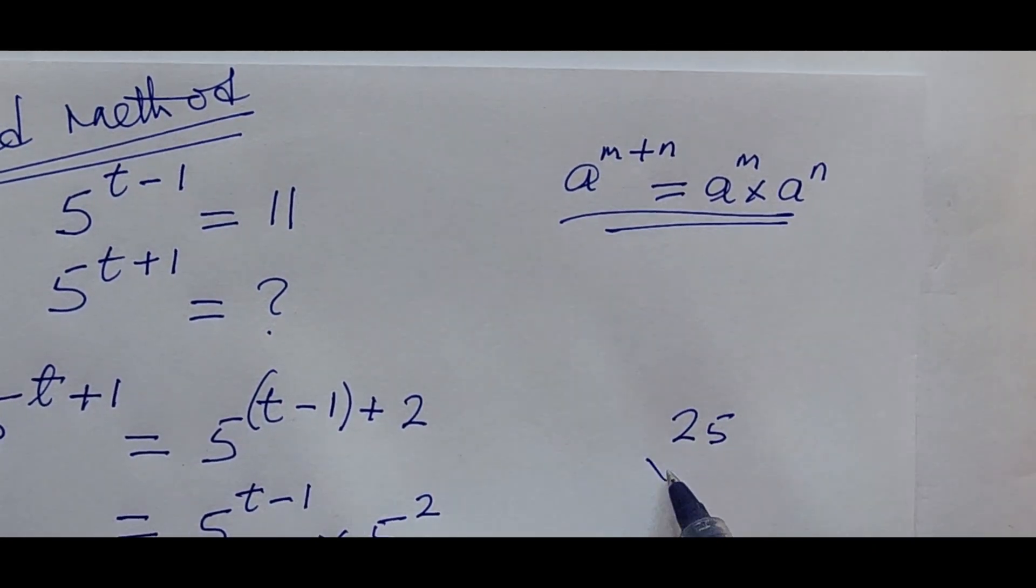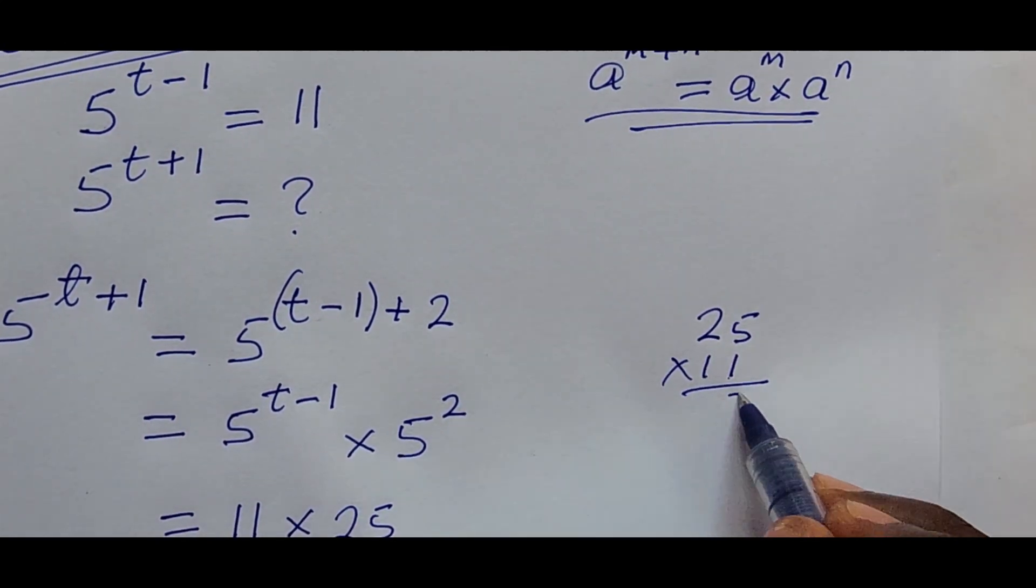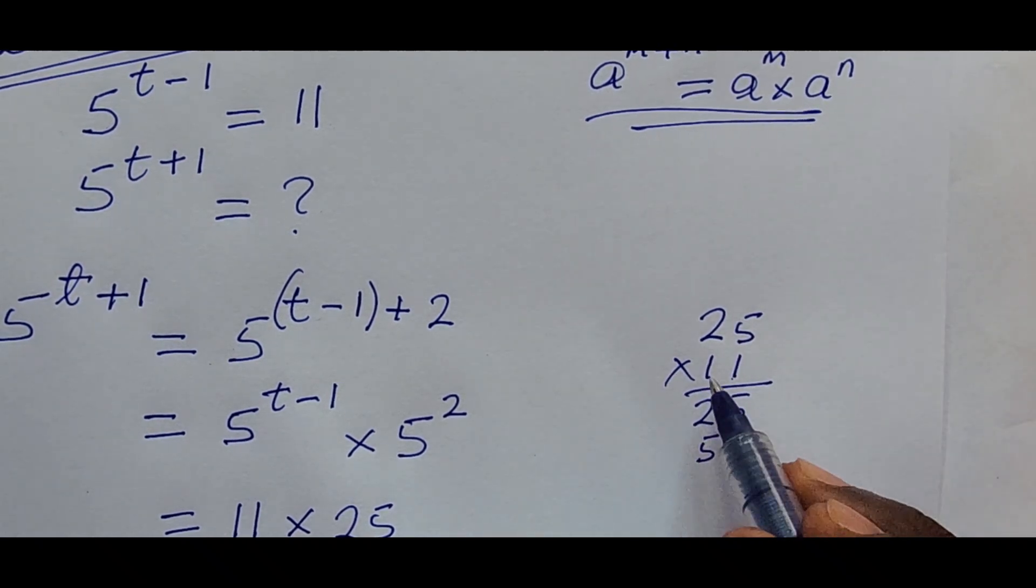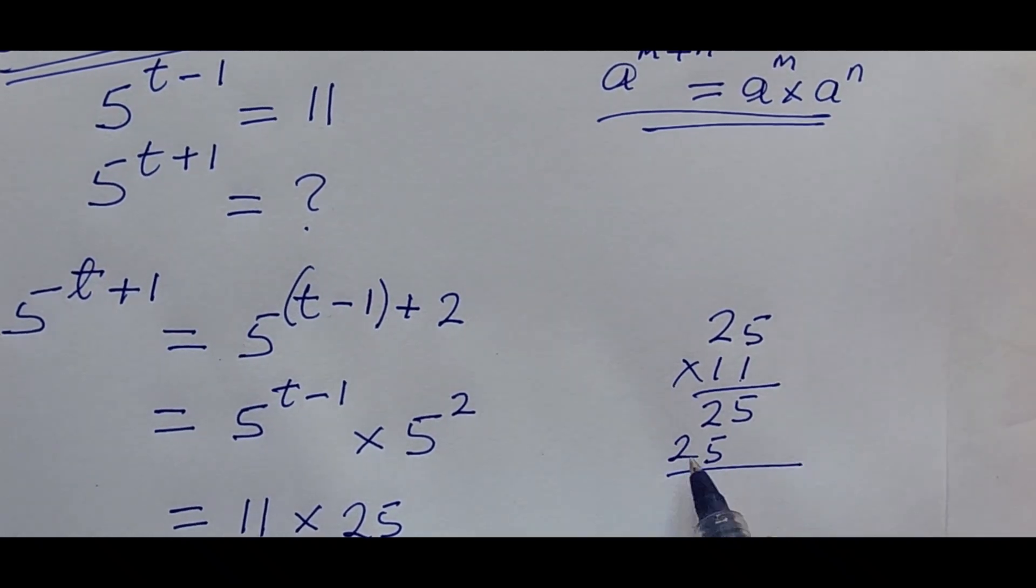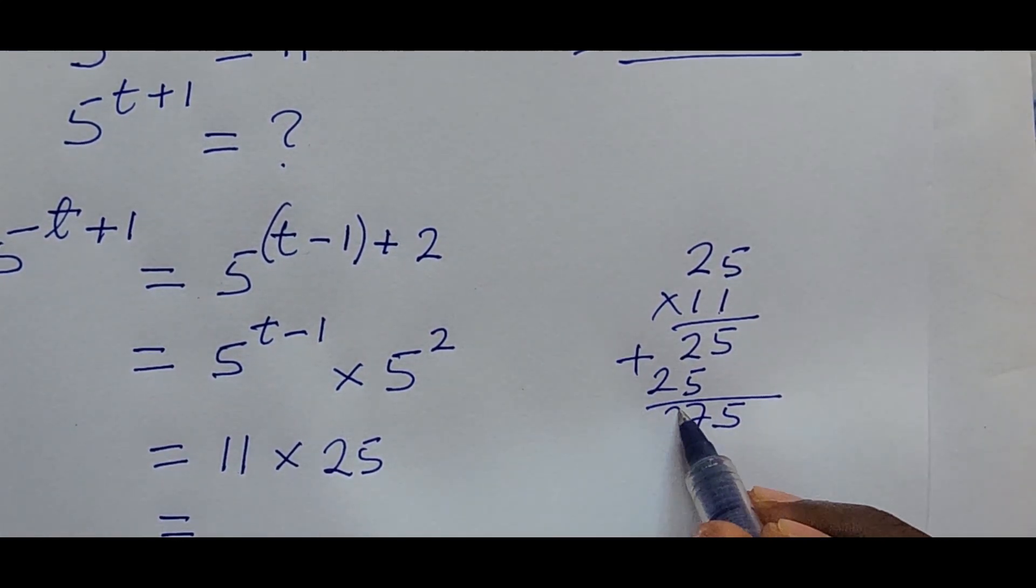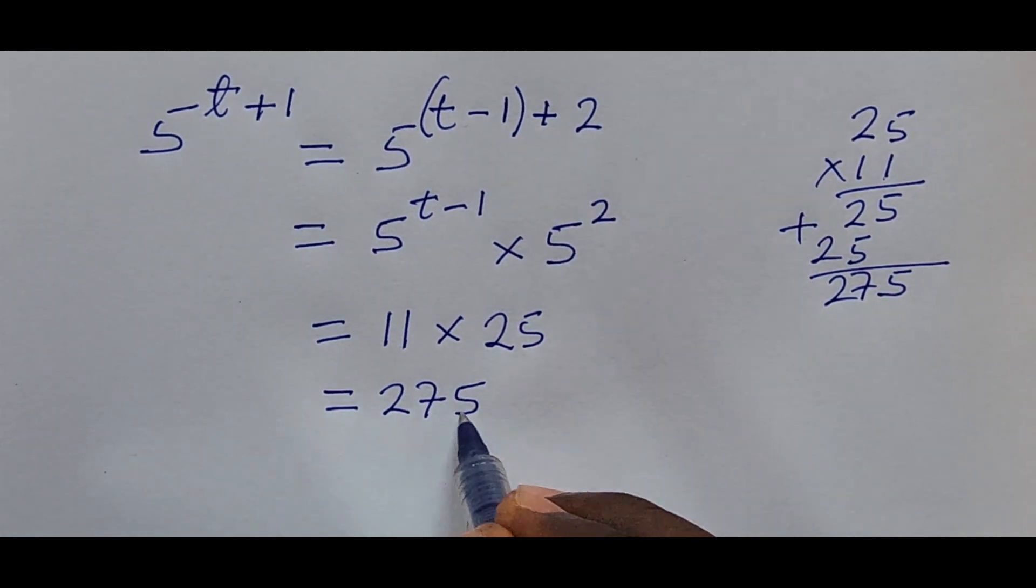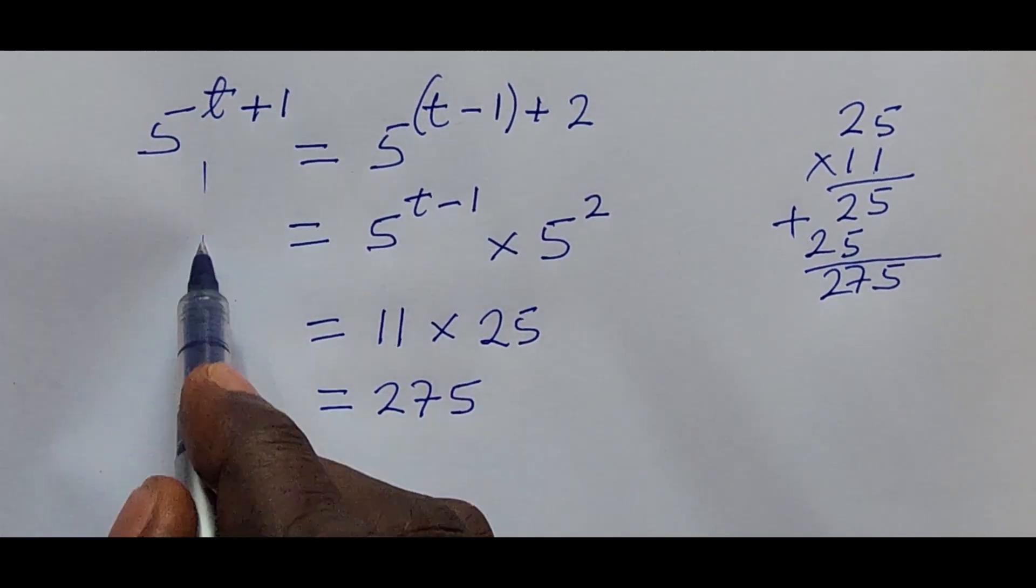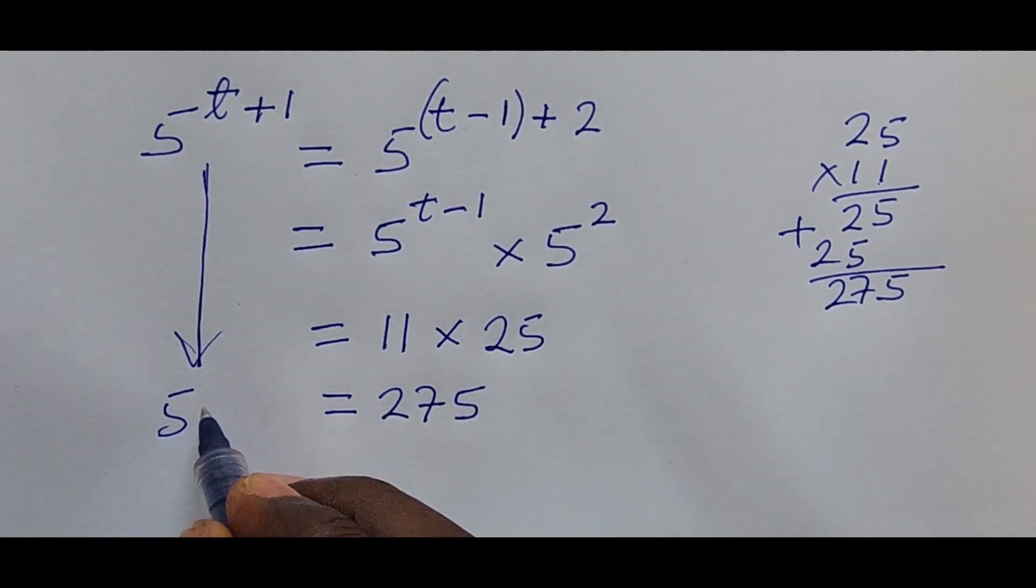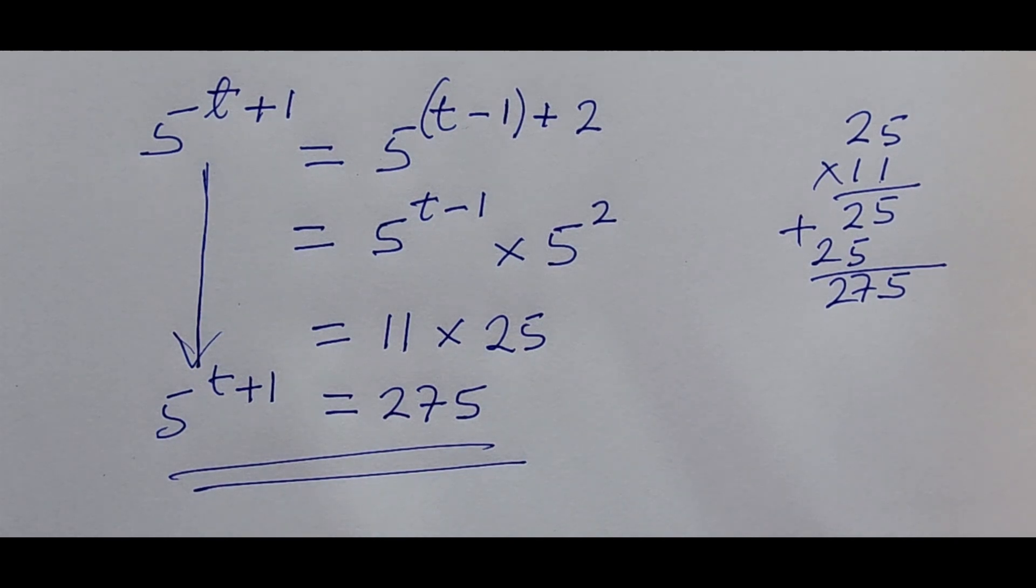So if we multiply 11 times 5, what would that give us? Let's go systematically. We have here 25 times our 11. So 1 times 5 would give us 5, 1 times 2 would give us 2, 1 times 5 would give us 5, 1 times 2 would give us 2. So if we add up this, it's going to give us 5, 7, 2. So this would give us 275.